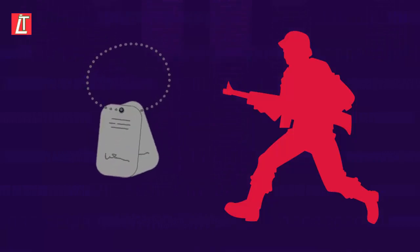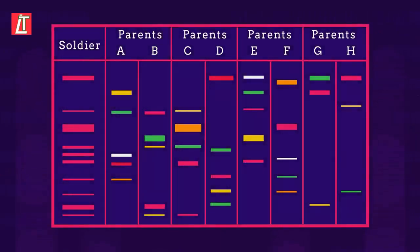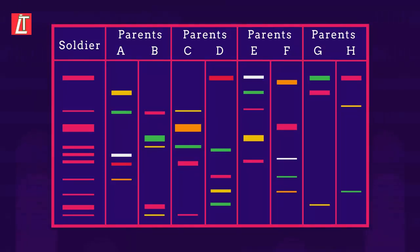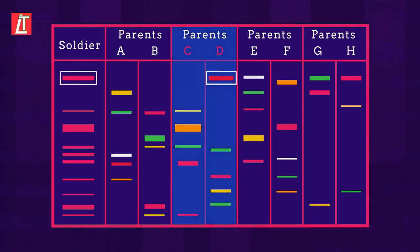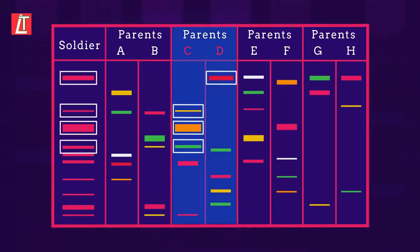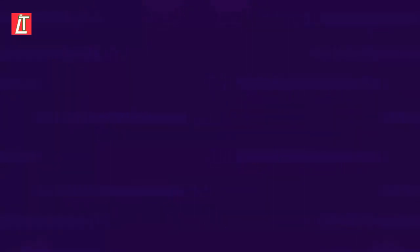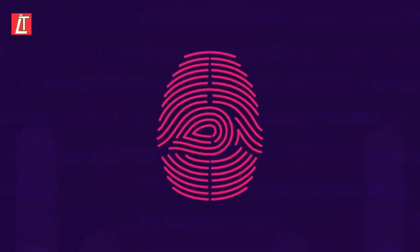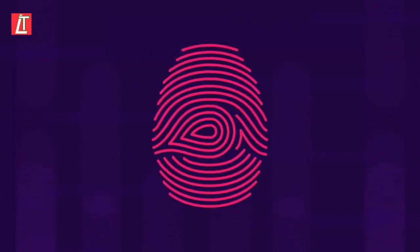A soldier has been killed in an explosion and has lost his dog tags that identify him. Three soldiers are missing from their unit, so the army asks three sets of parents for a DNA sample to compare it to the soldier's DNA and make an identification. Remember, the soldier will only share half of his DNA with each parent. Parents C and D are the soldier's parents — he inherited the first band from parent D, and the second, third and fourth from parent C, and so on. So now you understand how DNA profiles or fingerprints are made, and have seen some examples of where they can be used. You can even interpret a DNA profile yourself.